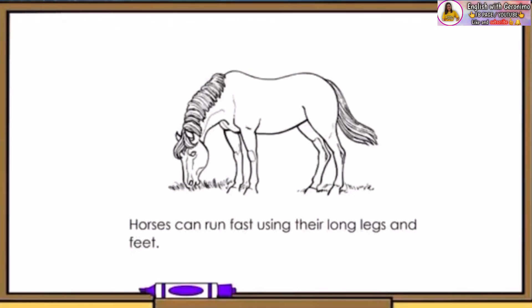This is a horse. What do horses usually do? They run fast. Horses can run fast using their long legs and feet.